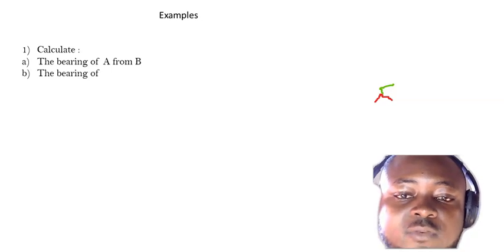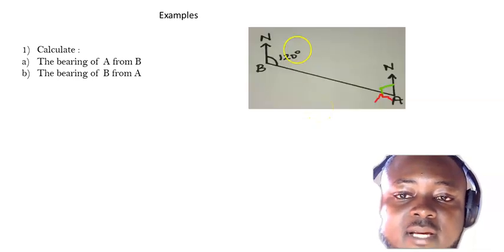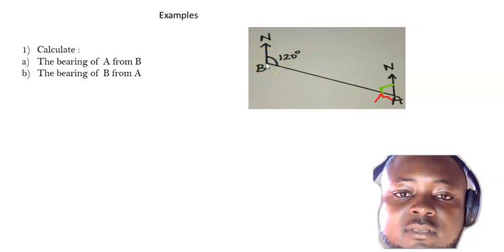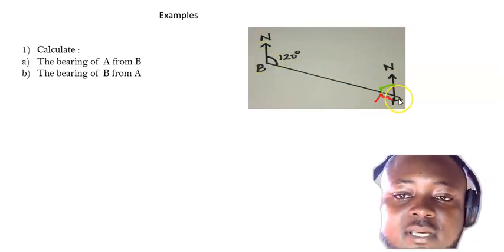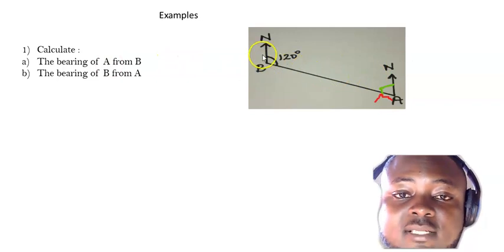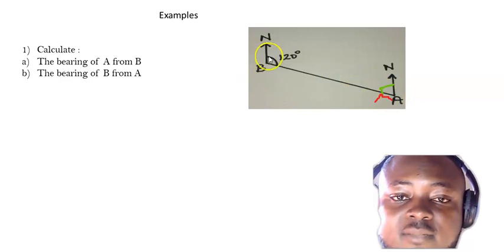Example one: calculate the bearing of A from B, and the bearing of B from A. Looking at the diagram, this is B and this is A. The bearing of A from B is simply 120 degrees.